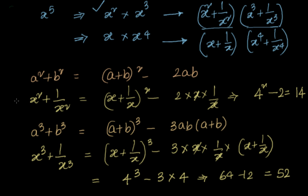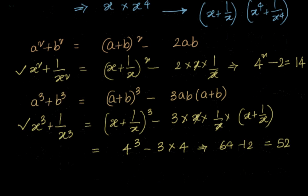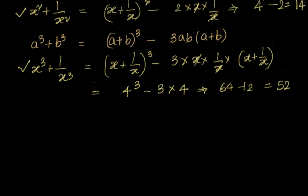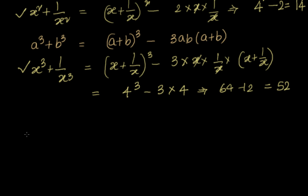Now, once we know x square plus 1 by x square and x cube plus 1 by x cube, we can go to the final step. We will take this as equation 1 and this as equation 2. We multiply them.